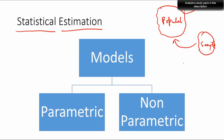This conclusion is an approximation of what is going to happen in the population. If your approximation is very close to what actually exists in the population, then your statistical estimation is quite good. Statistical estimations are basically of two types: parametric estimations and non-parametric estimations.